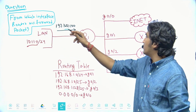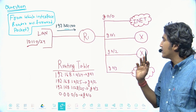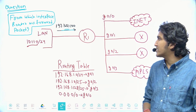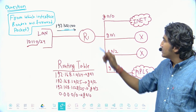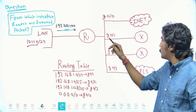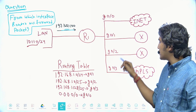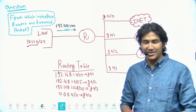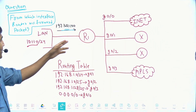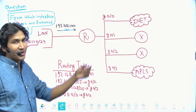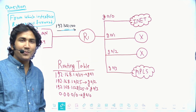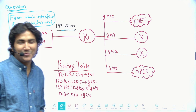The question is: from which interface will the router forward this packet? When the router receives this packet with destination 192.168.1.100, will it forward from interface 0/0, 0/1, 0/2, or 0/3? Try to find the exit interface and share your answer in the comments.